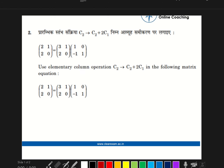Let's start with our second question. Use elementary column operation C2 → C2 plus 2C1 in the following matrix equation, which means we have to apply elementary column operation on column 2, which is column 2 plus 2 column C1.